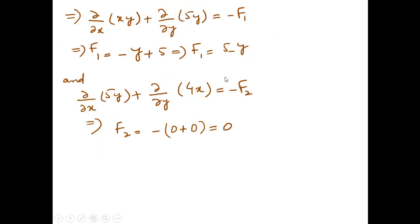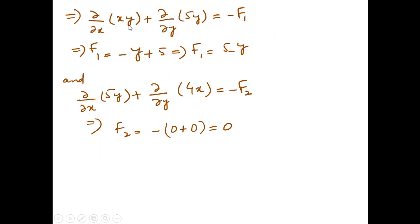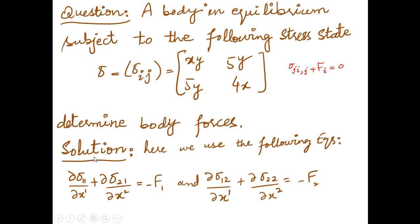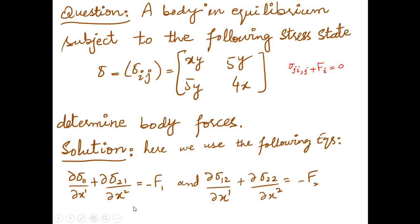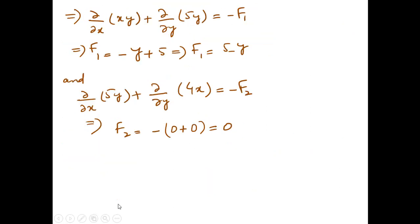Now we substitute the stress tensor components: sigma_11 is xy, sigma_12 is 5y, sigma_21 is also 5y, and sigma_22 is 4x. Replacing these values in the first equation: partial/partial x of (xy) plus partial/partial y of (5y) equals minus f1.